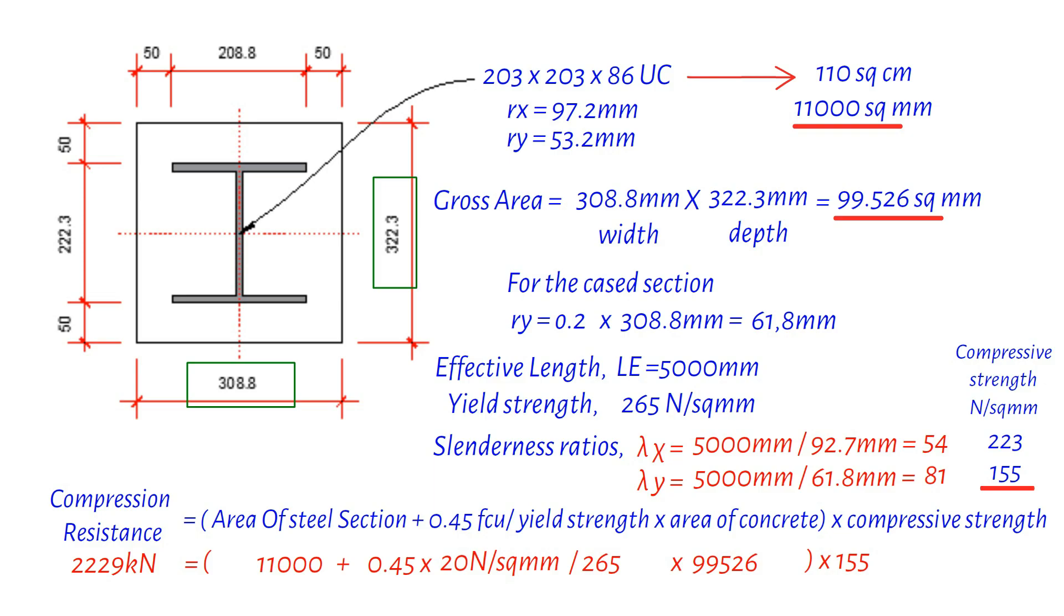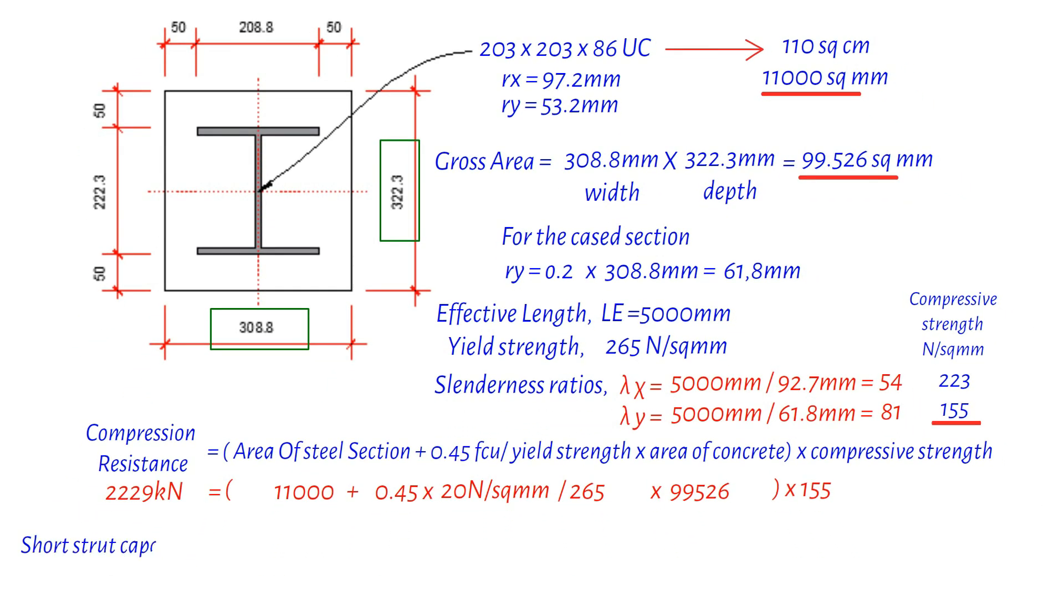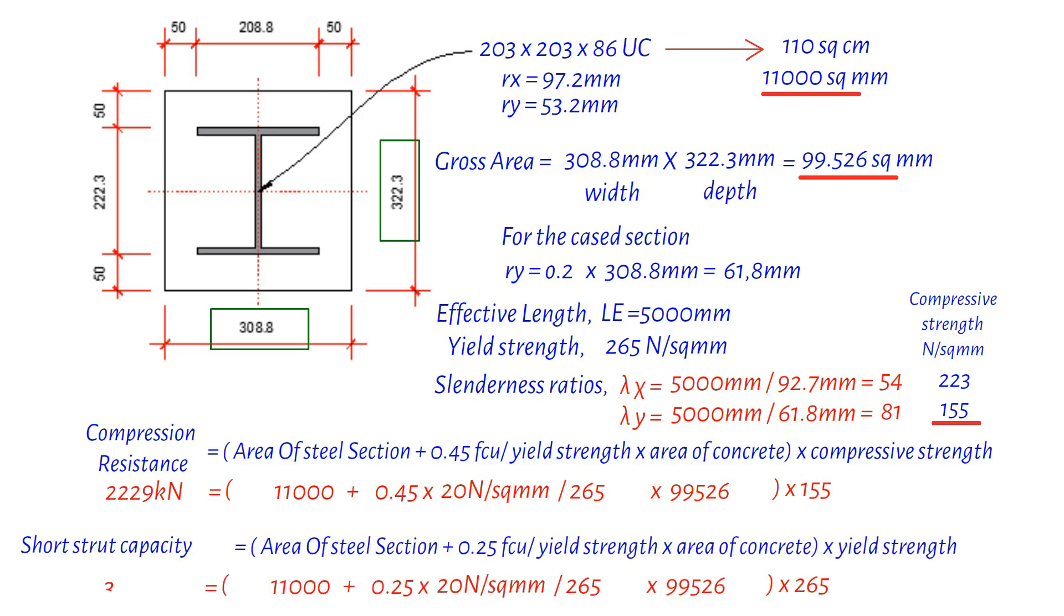Finally, let's compute the short-struct capacity. Using the formula shown, we find the short-struct capacity to be 3438 kilonewtons. After comparing the compression resistance and the short-struct capacity, we find that the compression resistance is less. Hence, the compression resistance of our cased column is 2229 kilonewtons. Have you considered what would happen if the compression resistance was greater than the short-struct capacity?